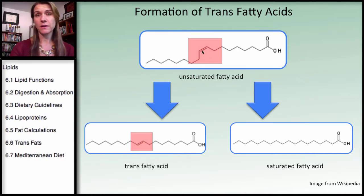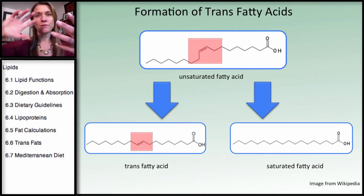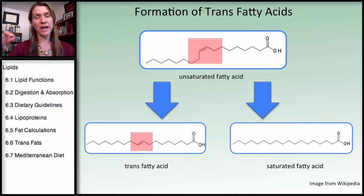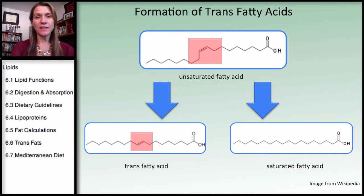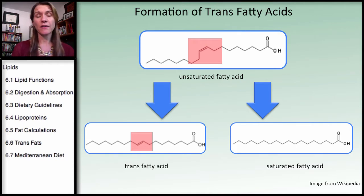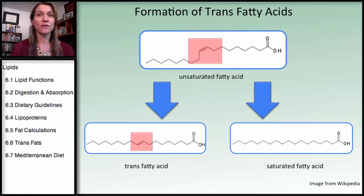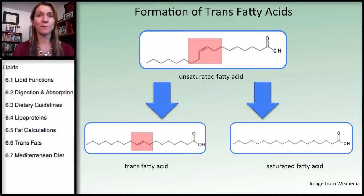They both have a double bond, but the structure is different. You don't have to know the details, but just think about having the double bond with the structure flipped a little bit. So instead of having a straight chain, there's going to be a kink in it. There's a kink in the unsaturated fat, but not the trans fatty acid. As I've pointed out before, when you have points of unsaturation or double bonds, this changes the structure of the fatty acid and therefore how it acts in the body.